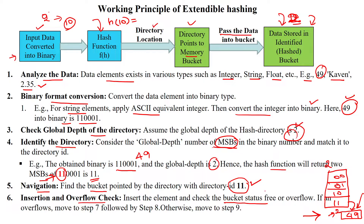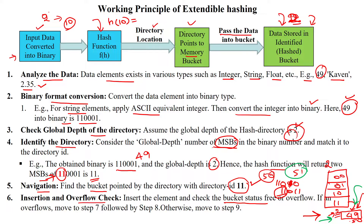Now suppose we have one more value with the same index '11' — for example, 50. Since global depth is 2 and the bucket still has space, we can also store 50 there. But if we now try to insert 51, its binary value is 110011, which also gives MSB '11'. However, the bucket is now overflowing — we cannot store 51 because the bucket is full and local depth is already 2.